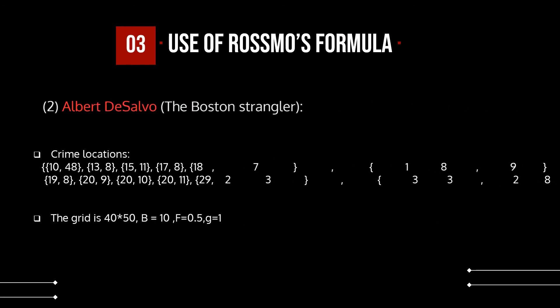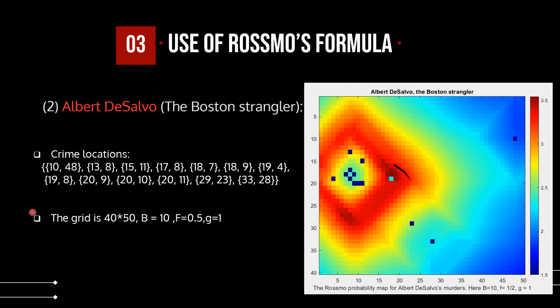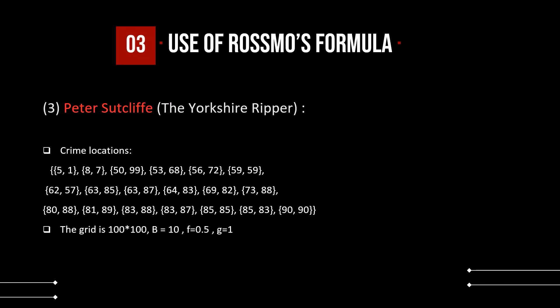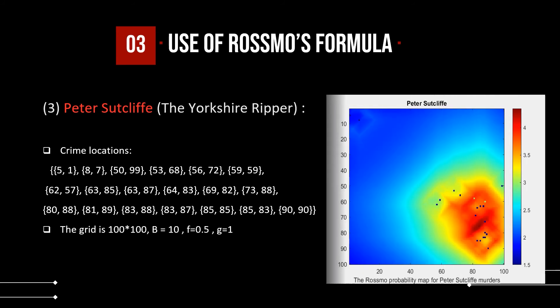Albert DeSalvo, known as the Boston Strangler, is another case. These are his details, and this is the location of his residence found by the model. Peter Sutcliffe, known as the Yorkshire Ripper, is a different case — for this one the model returned two possible locations for his residence, which can be considered a limitation of the model.